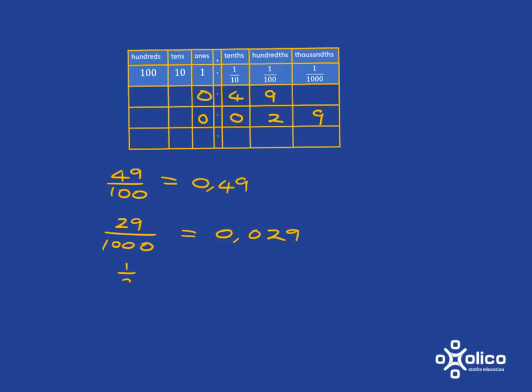If we have something like a half, the problem here is we don't have 10, 100, or 1,000 in the denominator. But that is very simple to sort out because we know equivalent fractions. So we can multiply top and bottom by 5. And we get that that is 5 tenths. And that is very easy. It's 0.5.